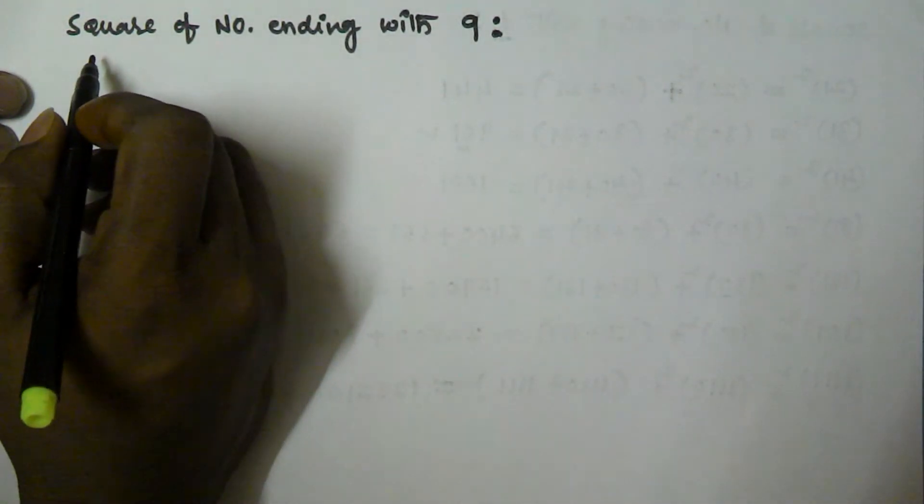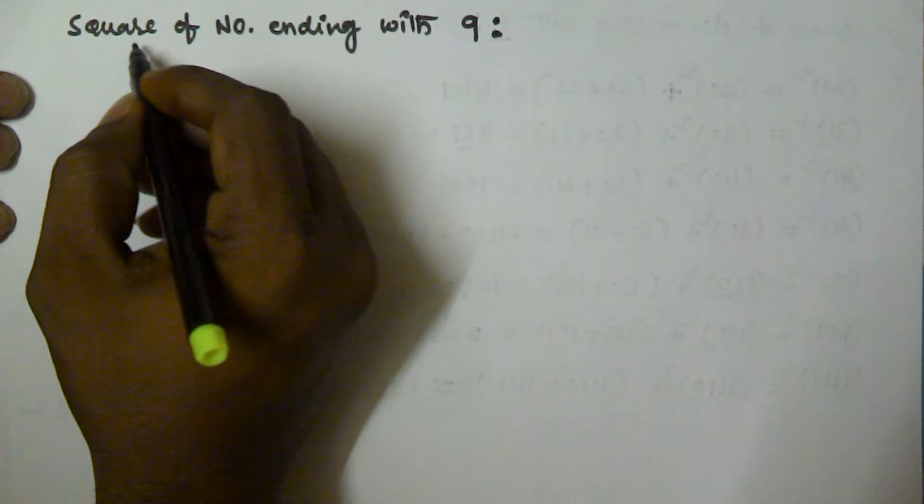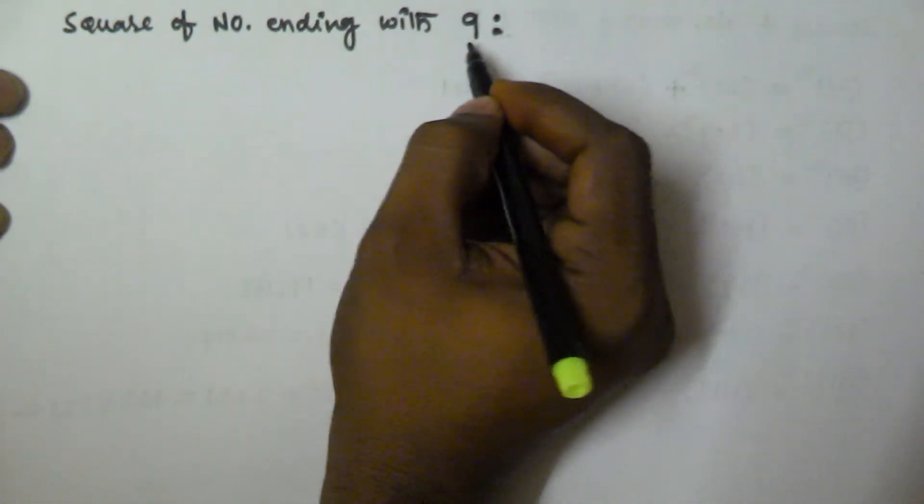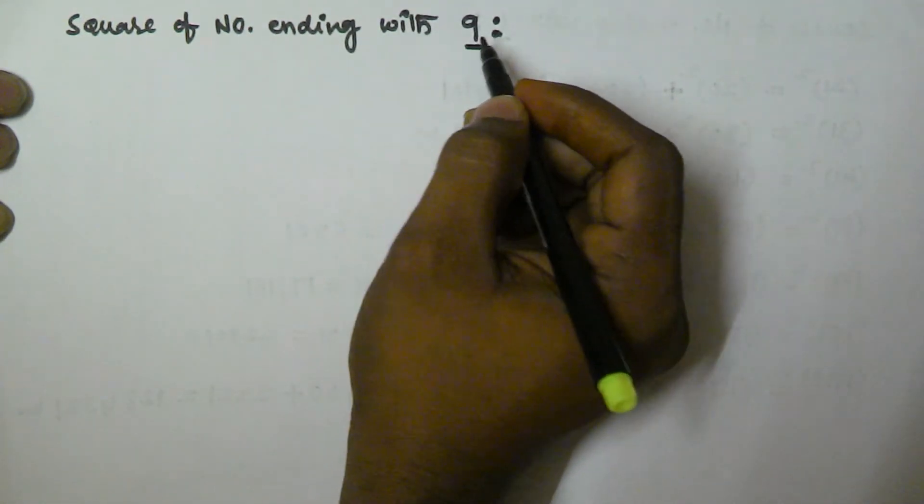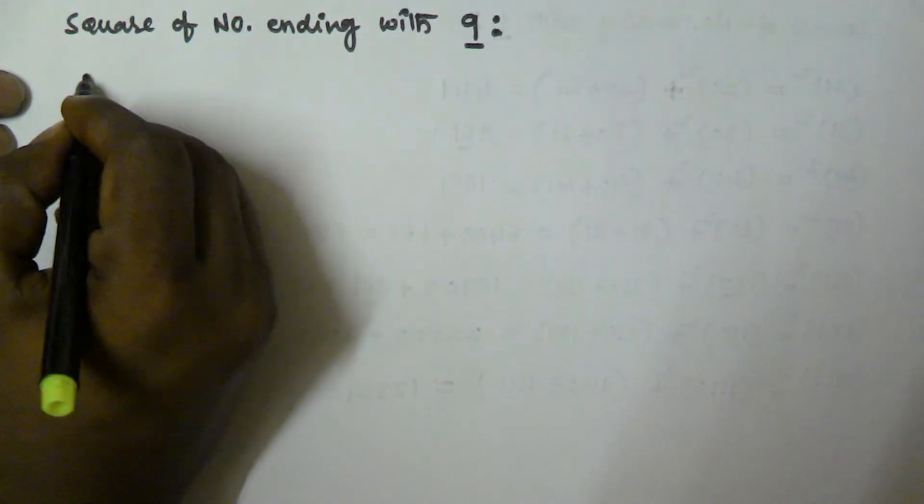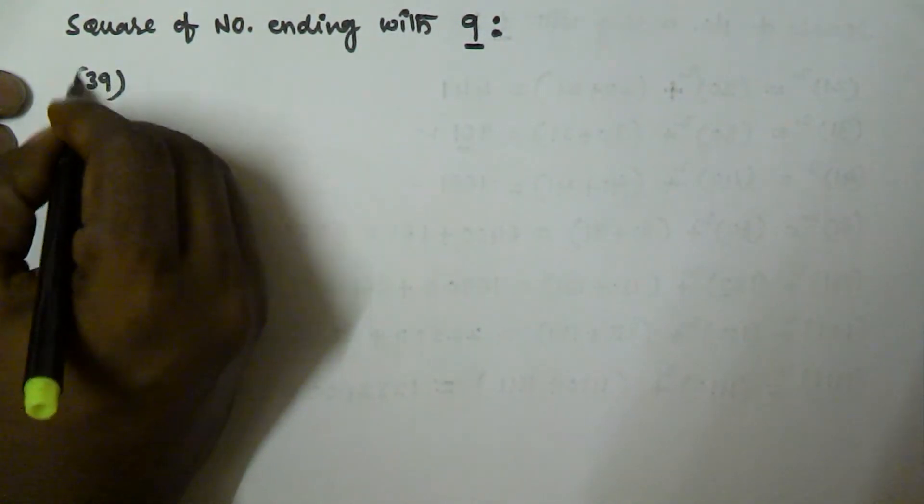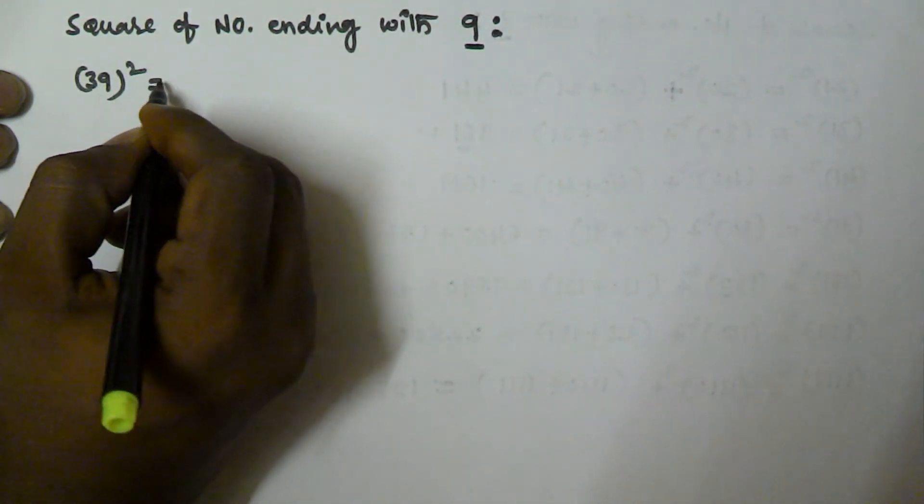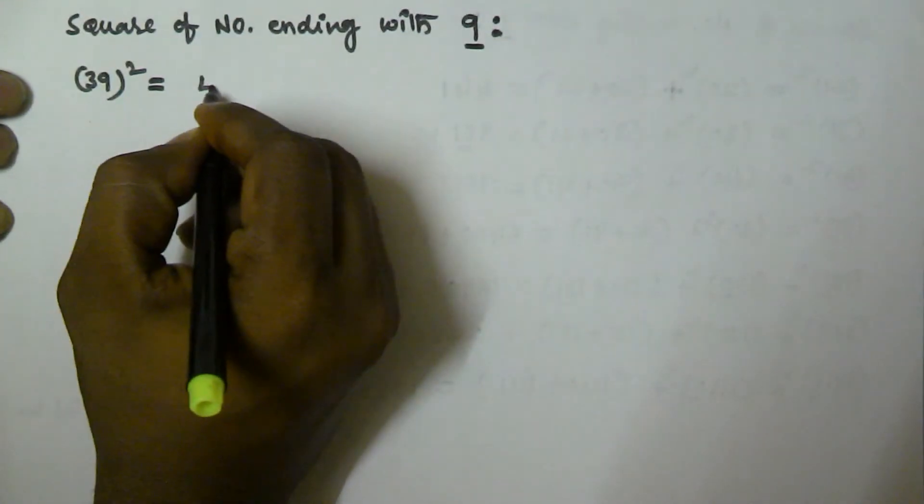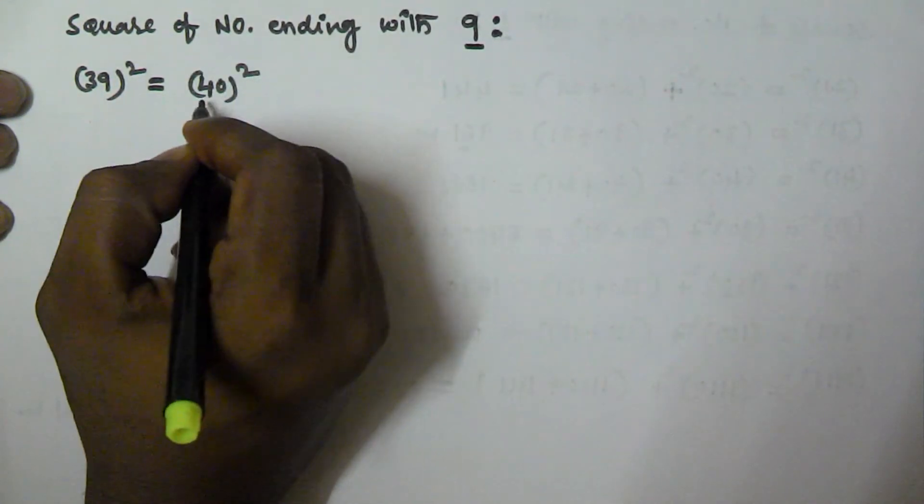Hello friends, in this video I will show you how to find the square of a number which is ending with 9. Let us find the square of 39, which is equivalent to 40 plus 1, that is 40 square. So 40 square is greater than 39 square.